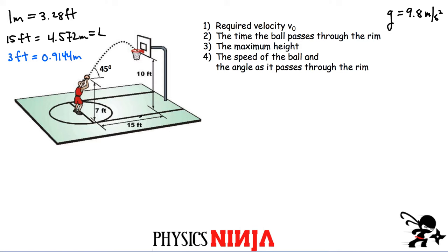For the vertical displacement, we start at 7 feet and the basket is at 10 feet, so the net vertical change is 3 feet, which is approximately 0.9144 meters. I'll call this vertical displacement H.